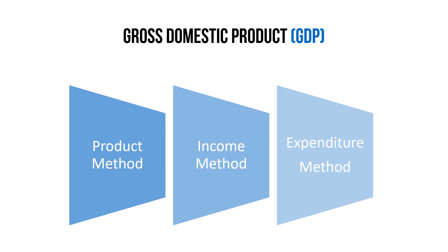In a particular accounting year, within a country, if we compute the total value added — the sum of all production — we find gross domestic product. The income method is based on the principle that the total production in the country generates income for factors of production. When we sum up the total income of all factors of production, we also get GDP.